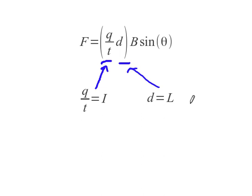By making these substitutions, my new equation tells me that the force is equal to the current times the length times the magnetic field strength times the sine of the angle in between the wire and the magnetic field.